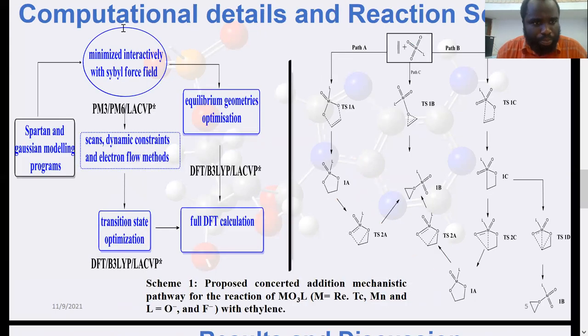On my left represent the computational details. All modeling was done on the Spartan and Gaussian modeling programs. For the equilibrium geometries or structures at the minimum, they were run after minimizing the structures interactively by the CYBERforce field. At the DFT level, any frequency corresponding to any degree of freedom in that system had a real frequency. This was different from the structures obtained at the saddle point. The transition states obtained from the scans, dynamic constraints, and the electron flow method showed that the vibration corresponding to the reaction coordinate had an imaginary frequency.